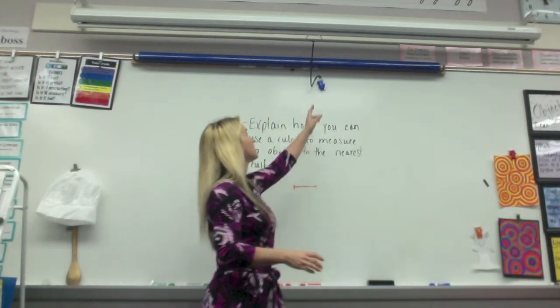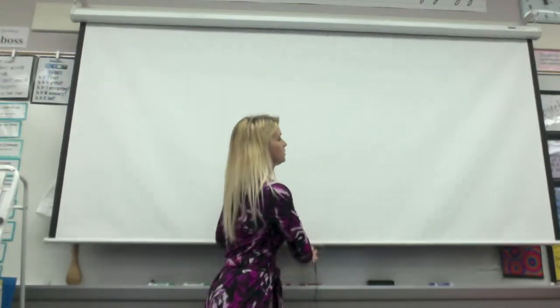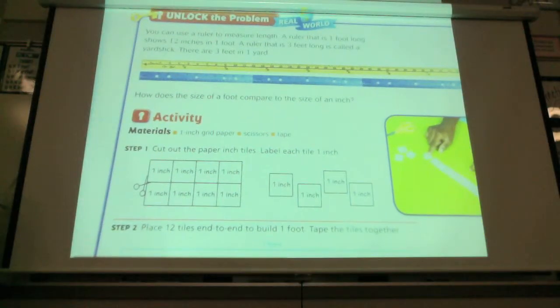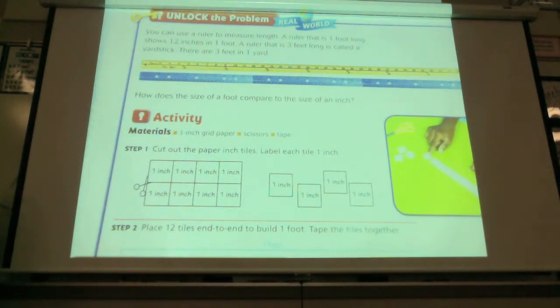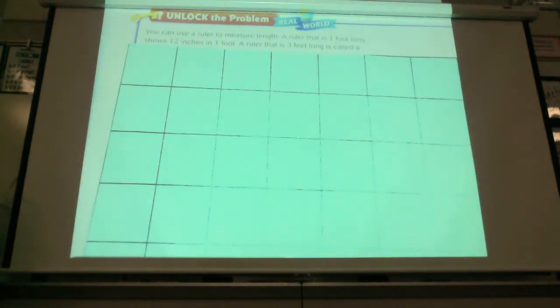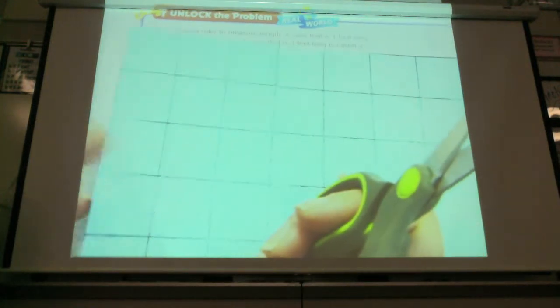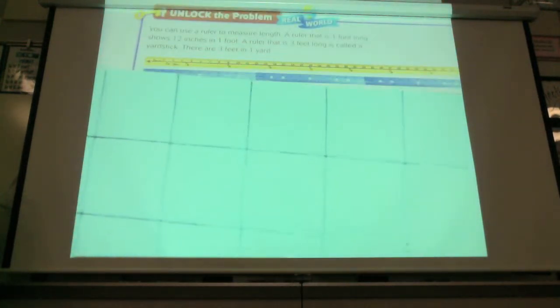Okay, we're going to go ahead and we're going to start our lesson today. We're actually not going to use a ruler, but we're going to make one. So you need your scissors. Go ahead and get your scissors out. So you can use a ruler to measure length. We've just talked about that. A ruler that is one foot long shows 12 inches in one foot. A ruler that is three feet long is called a yardstick. Remember yesterday we talked about yards is how many feet? Three feet. And there we go. There are three feet in a yard. But right now we're going to make ourselves a little one, and we're going to make ourselves a little ruler. And I have these grids like this. You're going to have some too. And we're going to cut out these squares. Does anybody have any idea how big these squares might be?